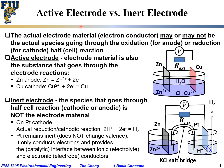The similarity between active and inert electrodes is that both conduct electrons and provide an interface between the ion-conducting electrolyte and the electron-conducting external circuit. The difference is that for active electrodes, the electrode material itself — such as copper or zinc — participates in the electrochemical half-cell reactions. For inert electrodes, metals such as platinum or gold, and often graphite, do not participate in the active cathodic reduction or anodic oxidation half-cell reactions.